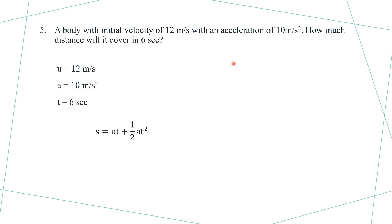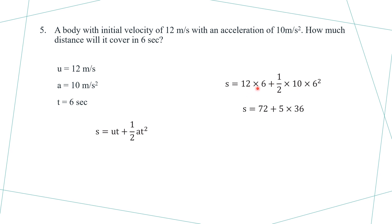Since acceleration is uniform, we use the equation of motion: s equals ut plus half at squared. Putting values: s equals 12 into 6 plus half into 10 into 6 squared. That gives s equals 72 plus 5 into 36, equals 72 plus 180, equals 252 meters.